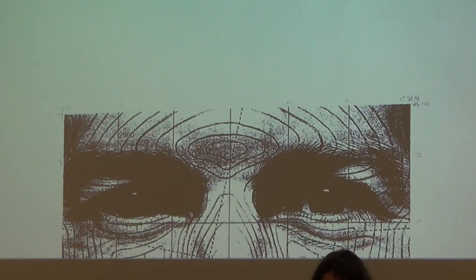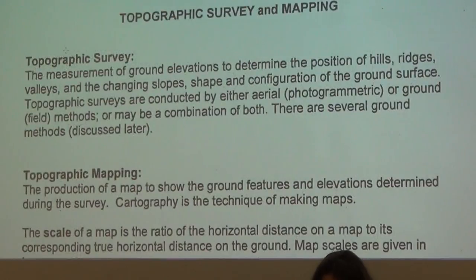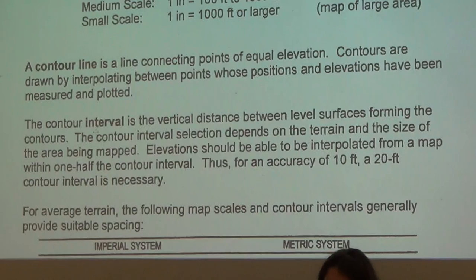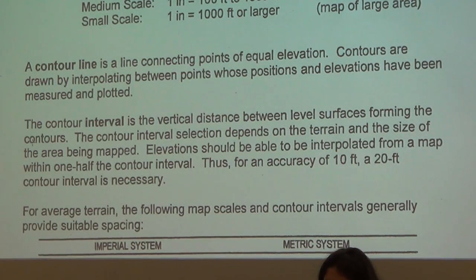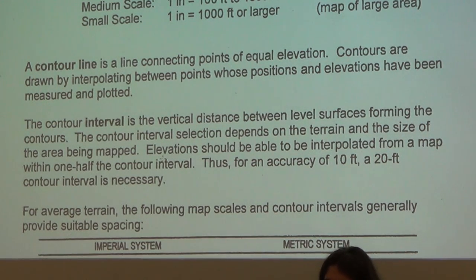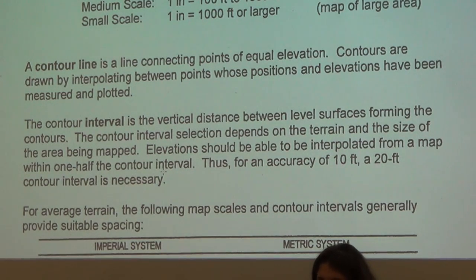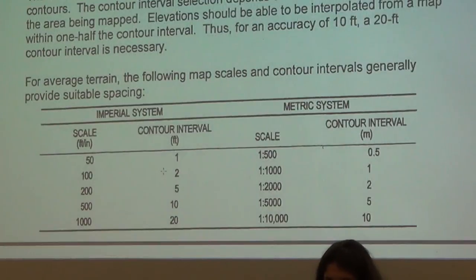A contour line is a line connecting points of equal elevation. Every point along this line is at 140 feet, and the differences in elevation here are 20 feet. The contour interval is consistent — it's 20 feet. The contour interval is the vertical distance between the level surfaces forming the contour lines, and its selection depends on the terrain and the size of the area being mapped.